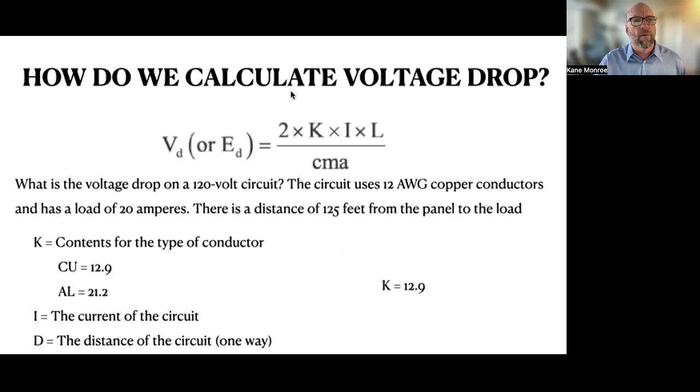So here we go. How do we calculate it? We use this formula right here. Here's the question right here. What is the voltage drop? First off, let's figure out what K is. In the question, it told us that we had number 12 copper conductors. So we're going to use 12.9 to go into the K section.